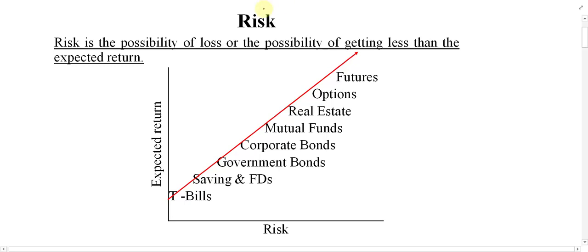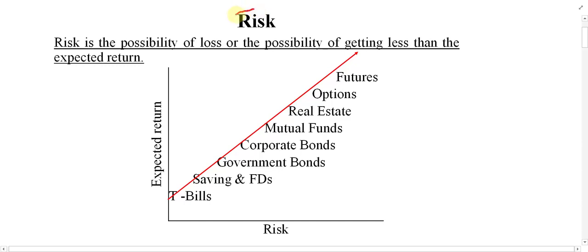In this video we want to talk about risk — what is risk, and of course what is the relationship between risk and return, as well as what are the different types of risk. First of all, we have to define risk. A simple definition: risk is the possibility of loss.